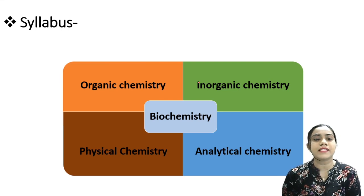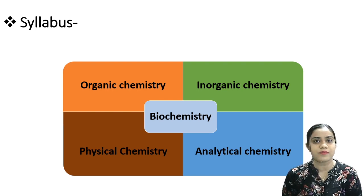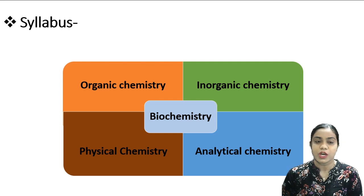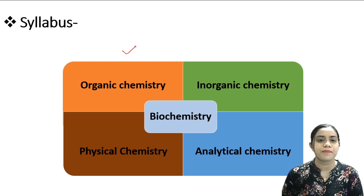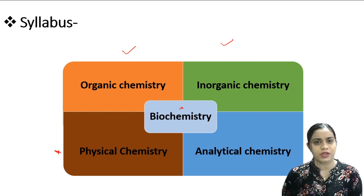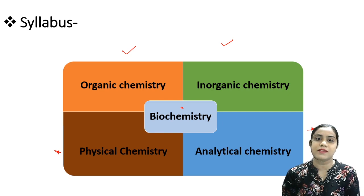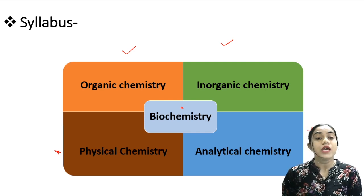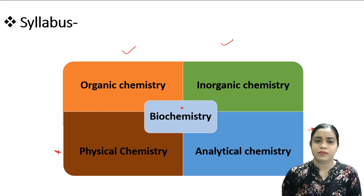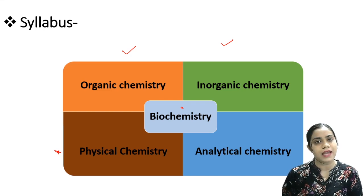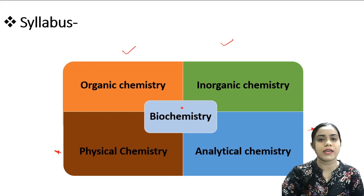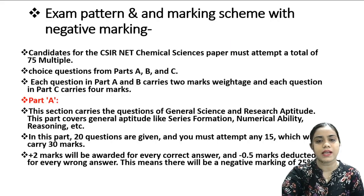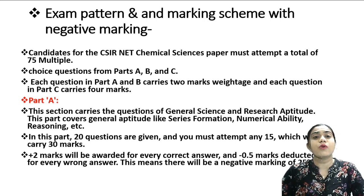The syllabus of CSIR NET Chemical Science covers a wide range of topics from various branches of chemical science. The major syllabus topics are: organic chemistry, inorganic chemistry, physical chemistry, analytical chemistry, and biochemistry. Biochemistry includes biomolecules in the organic section and bio-inorganic chemistry in the inorganic section. So the syllabus is divided into five major categories: organic, inorganic, physical, analytical, and biochemistry.